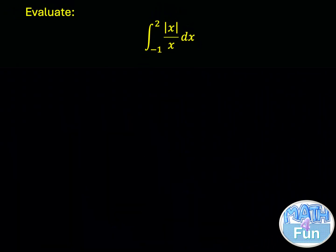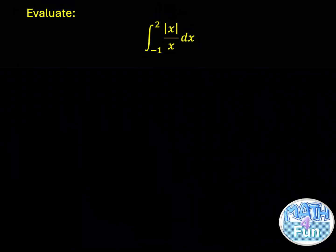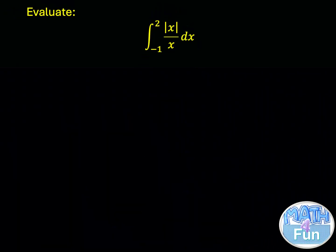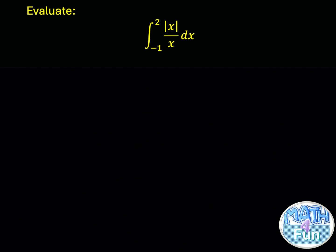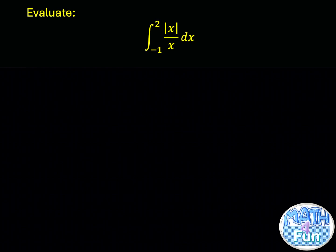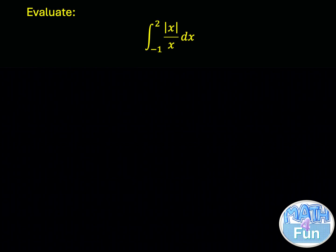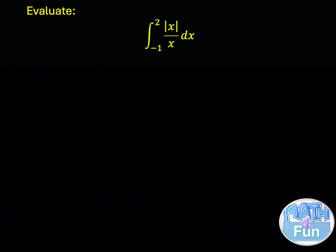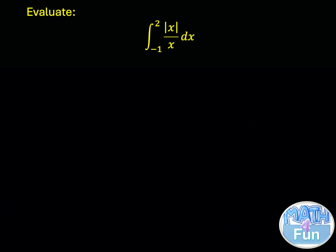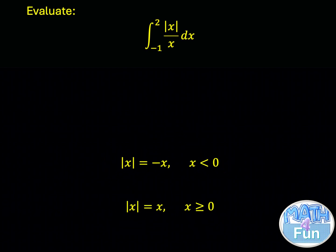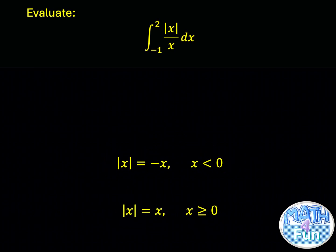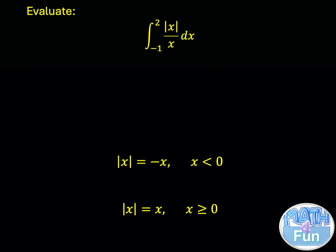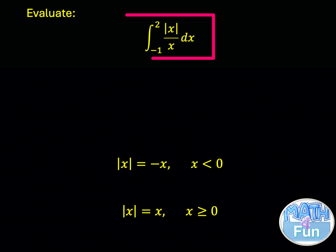Evaluate the integral from minus 1 to 2 of absolute x over x dx. To evaluate this integral, we first need to split it into two parts, because the absolute value of x changes its behavior at x equal to 0.